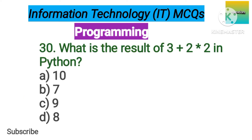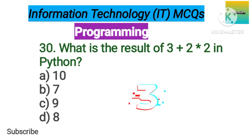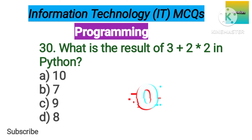Number 30. What is the result of 3 + 2 ** 2 in Python? Option A: 10. B: 7. C: 9. D: 8. The correct answer is option B, 7.